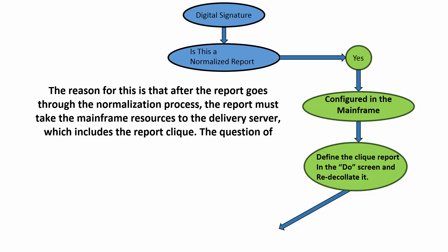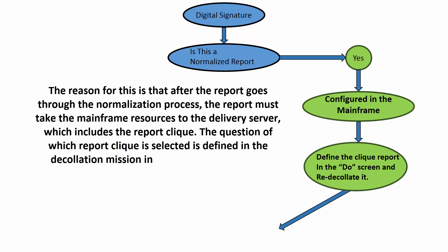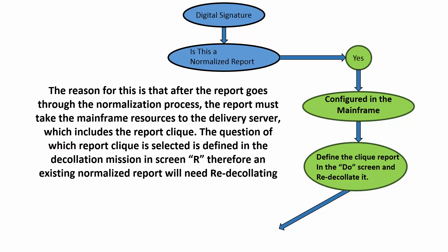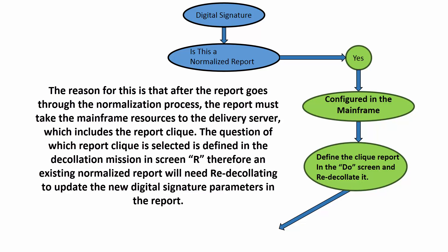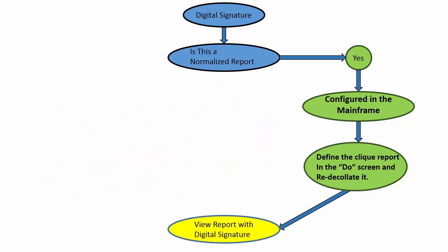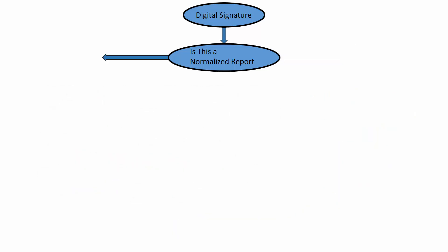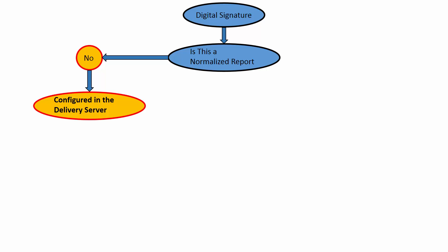The question of which report click is selected is defined in the decolation mission in screen R. Therefore, an existing normalized report will need re-decolating to update the new digital signature parameters into the report. Only after the previous flow is completed can the normalized report be viewed with the digital signature. If the answer was no to the normalized report question, it means that the report click being used is configured in the delivery server.